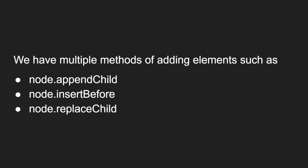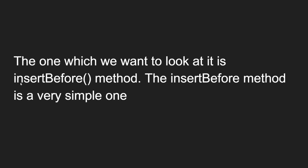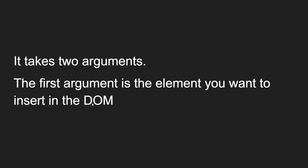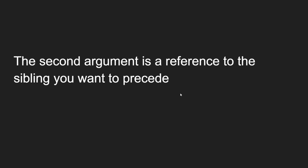So we have appendChild, insertBefore, and replaceChild. The insertBefore method is a very simple one. If you want to place the element wherever you want, you use the insertBefore method. It takes two arguments: the first argument is the newly created element — whatever element you created using createElement — and the second argument is the reference to the sibling you want to precede, meaning the element before which you want to place it.